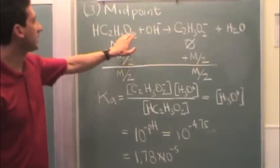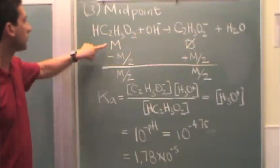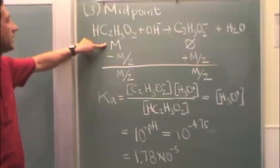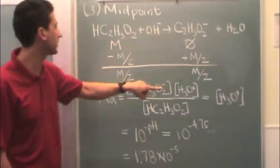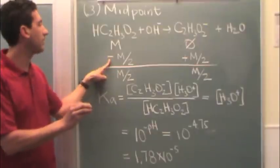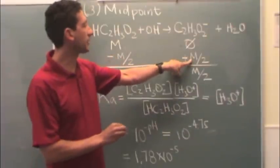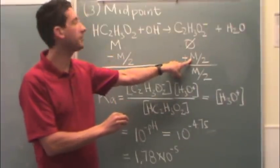So we have this reaction, the acid plus the base goes to the conjugate plus water. We're starting out with a certain molarity of the acid and zero of the conjugate. To the midpoint, we're going halfway there. So if we're going halfway there, we're losing half of it.